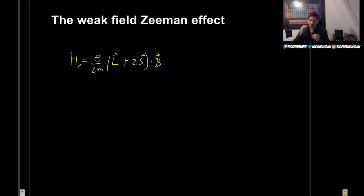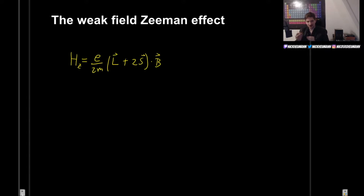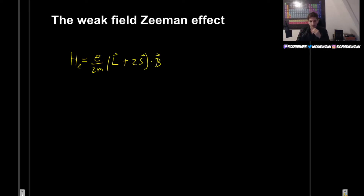In this video, we will discuss the weak field Zeeman effect, which is simply the Zeeman effect in the case where we have a weak magnetic field. And why is this important? As we mentioned, we have to use different methods for different magnitudes of the magnetic field.